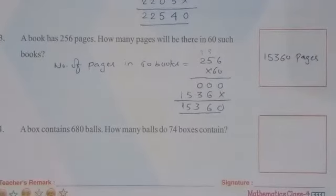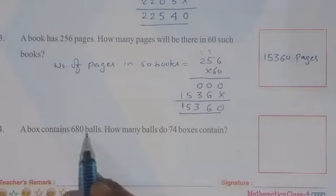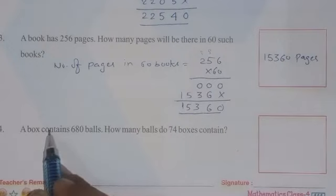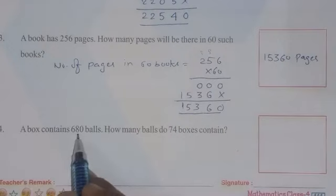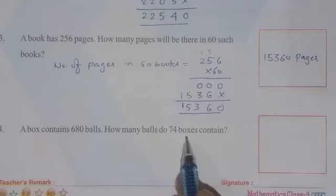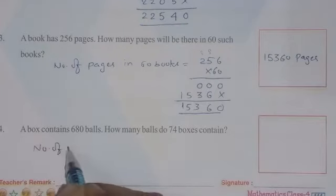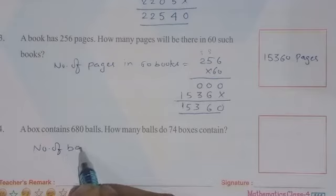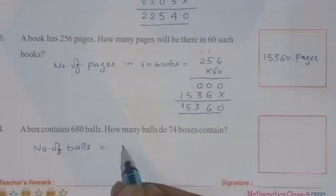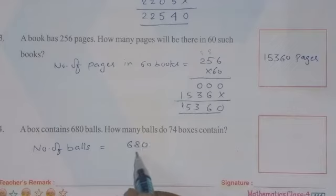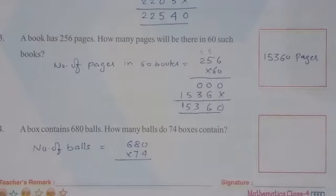A box contains 680 balls. How many balls do 74 boxes contain? A box contains 680 balls. In one box number of balls are 680. So how many balls will be there in 74 boxes? Number of balls are 680, so 680 and multiply by 74. Okay students, so start multiplication.